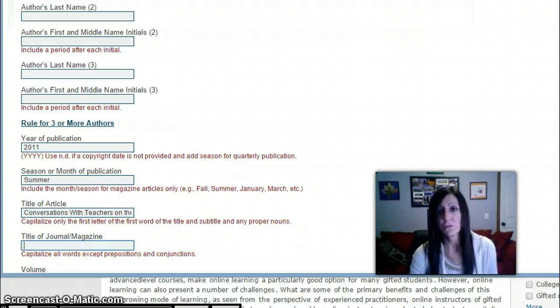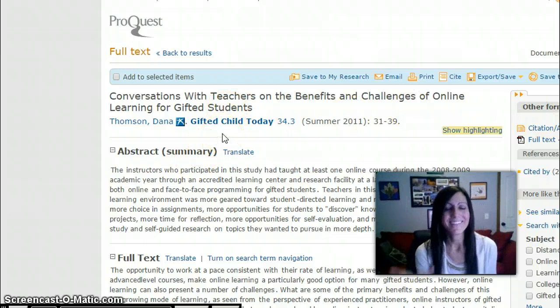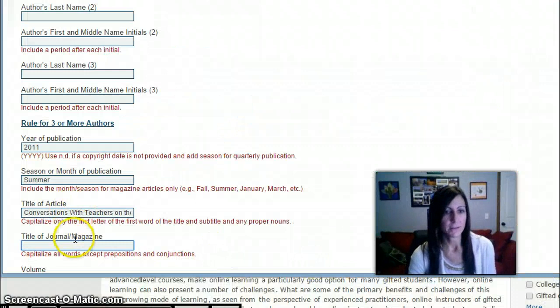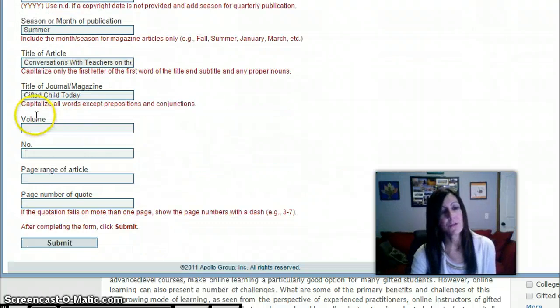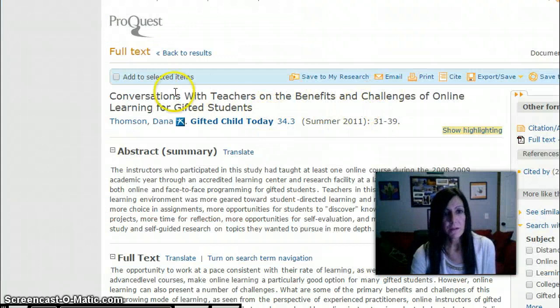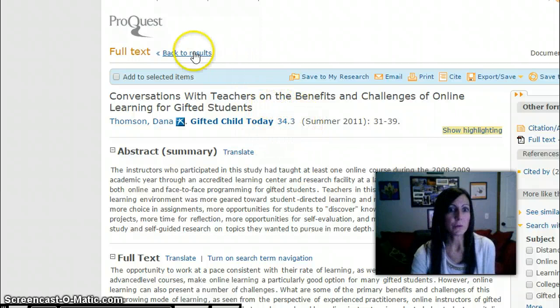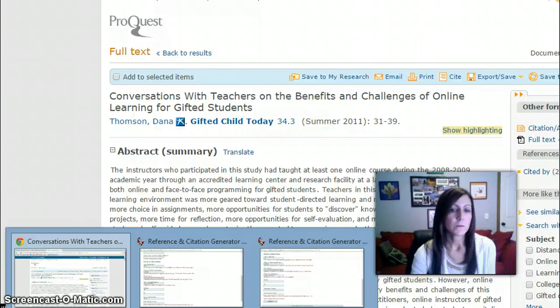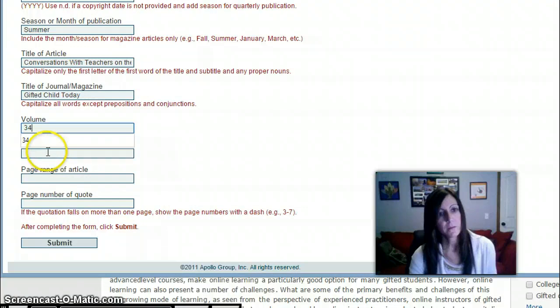Now I need to type in the title of the journal magazine. So the title of the journal is Gifted Child Today. I'm going to scroll back there. I'm going to type in Gifted Child Today. Now I need to enter my volume and issue number. Look back here. Here's all my bibliographic information. Here's the volume number, 34 and then the number is 3, issue number is 3. So I'm going to type in 34 and then I'm going to type in 3.